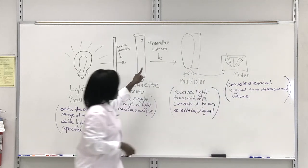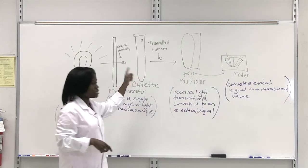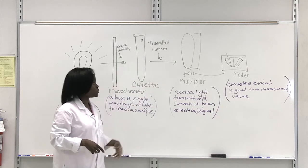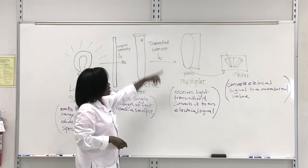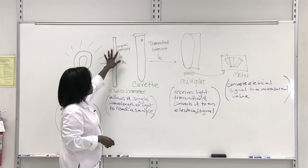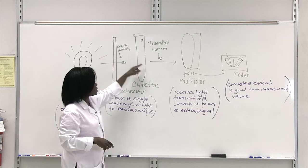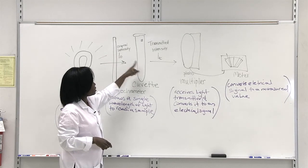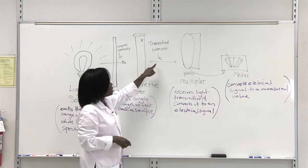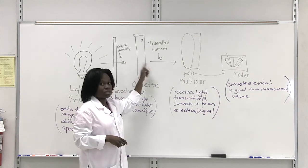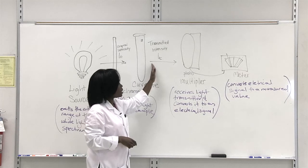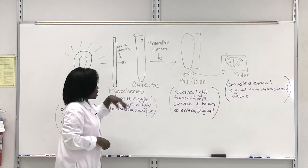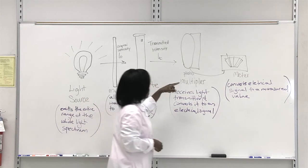So your sample absorbs light but it gives off what is not absorbed. And this is called the transmitted intensity. This is the original intensity of light that's hitting the mixture, the light of a particular wavelength. This is whatever is left, what didn't get absorbed and is left and is going to be transmitted.